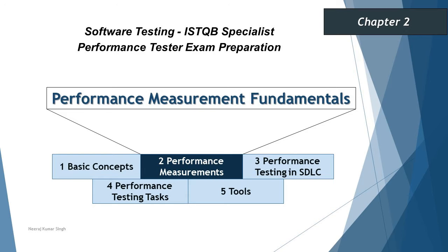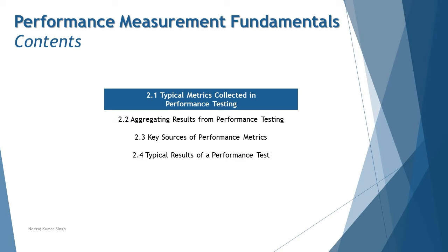As part of this chapter, we have different segments to be covered: 2.1 - typical metrics collected in performance testing, 2.2 - aggregating results from performance testing, 2.3 - key sources of performance metrics, and 2.4 - typical results of a performance test.